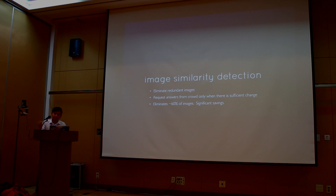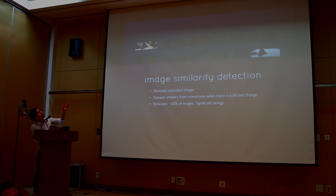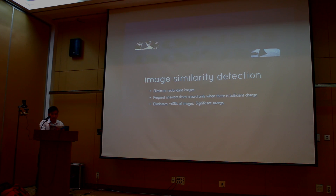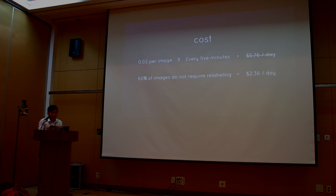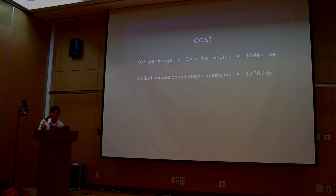You can imagine lots of images are going to be redundant — for example, dark images of a parking lot at night. In our study, we found that 60% of the data is redundant and doesn't need to be relabeled. By detecting similar images, we limit the amount of requests that go to the crowd. This lets us reduce our cost quite a bit, down to about $2.30 a day. So from $3,000, we can actually run our sensor for three and a half years running purely on the crowd, which is starting to get economically feasible.